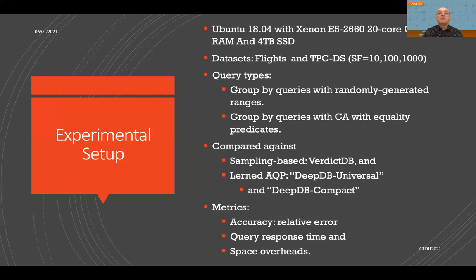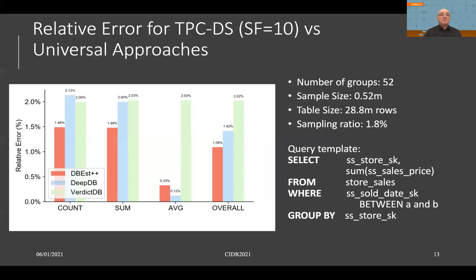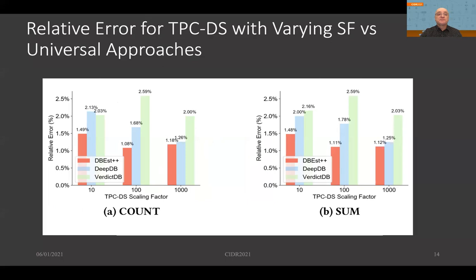We conducted a large number of experiments — please look at the paper for full details. We evaluated queries as described and compared against the state-of-the-art sampling-based approach VerdictDB, and the state-of-the-art learned approaches for approximate query processing, DeepDB and FLAT. For DeepDB we consider two versions: DeepDB Universal and DeepDB Compact. DBS++ outperforms both VerdictDB and DeepDB, particularly for SUM and COUNT, with an improvement of about 40% in relative error. Using different scaling factors on the TPC-DS dataset, we see the same results.